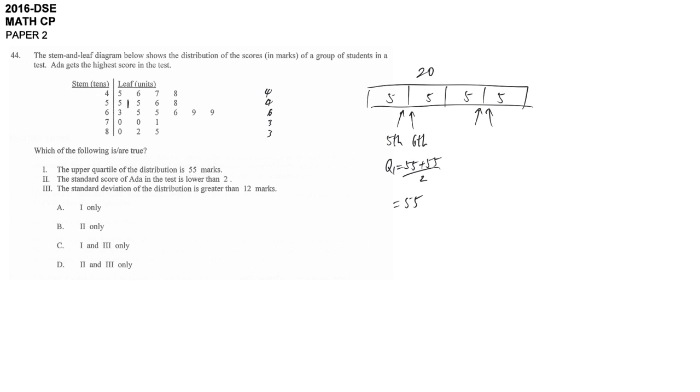And then from the back, we count the number of data. It's the 15th data to 16th data. So from the back, we count it. We find it's 70 plus 70 divided by 2. So Q3 is equal to 70.